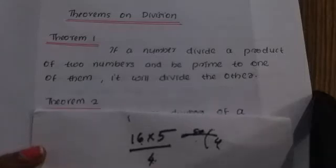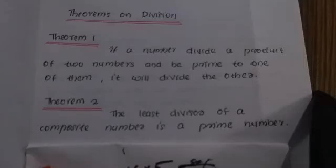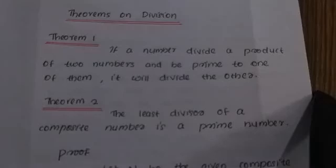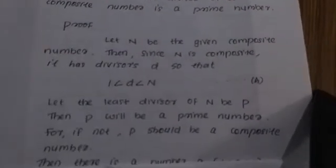Next, Theorem 2: The least divisor of a composite number is a prime number. The least divisor of a composite number — the least divisor of a composite number is a prime. Now let's get the proof.